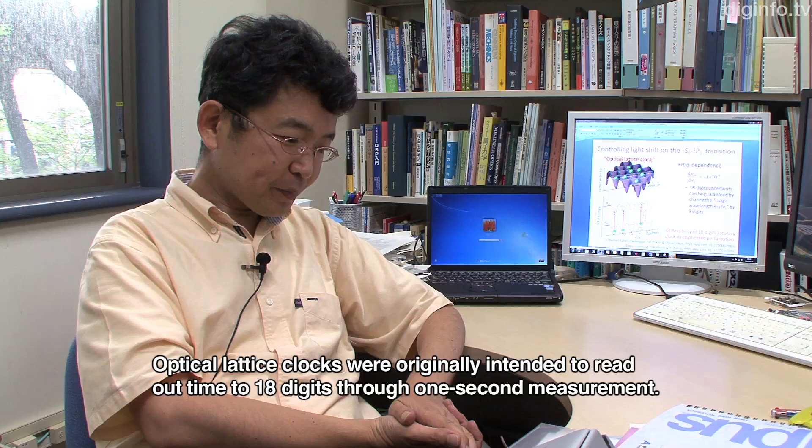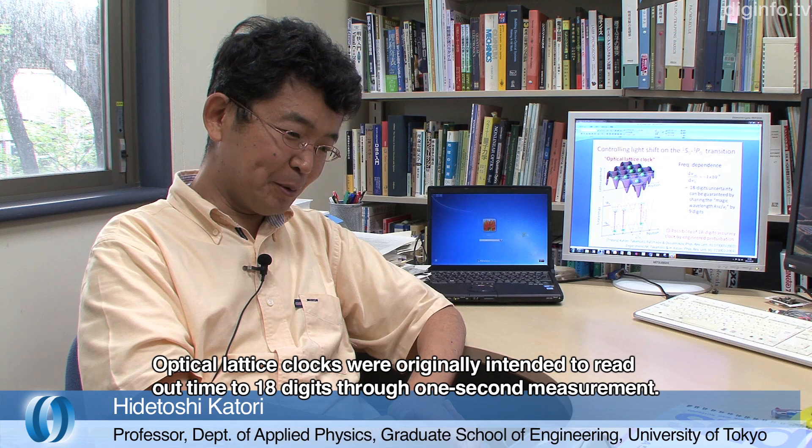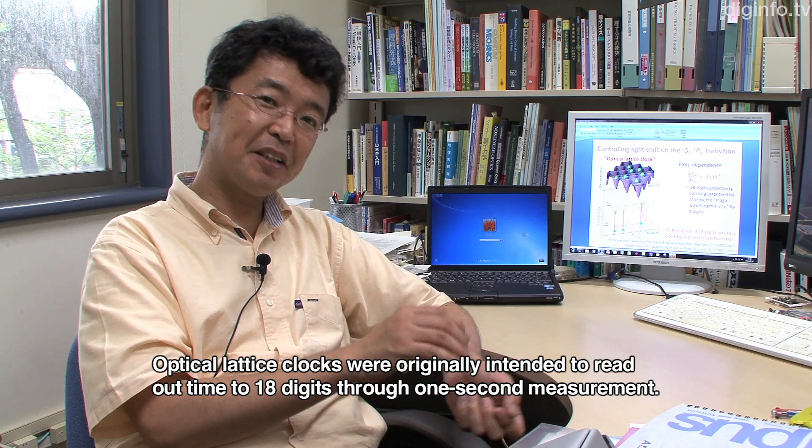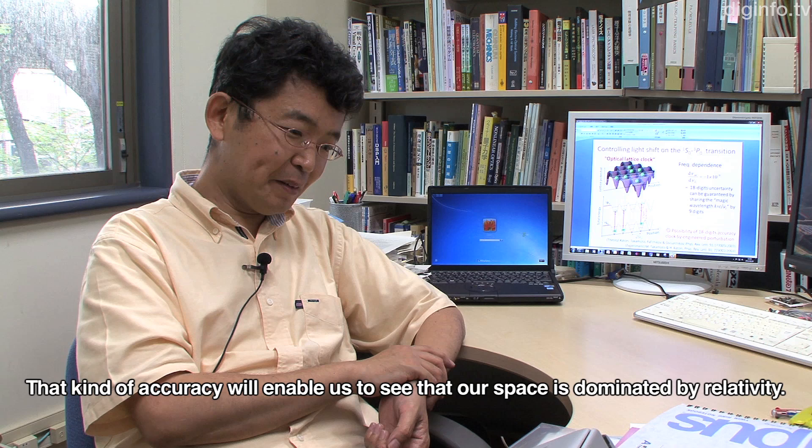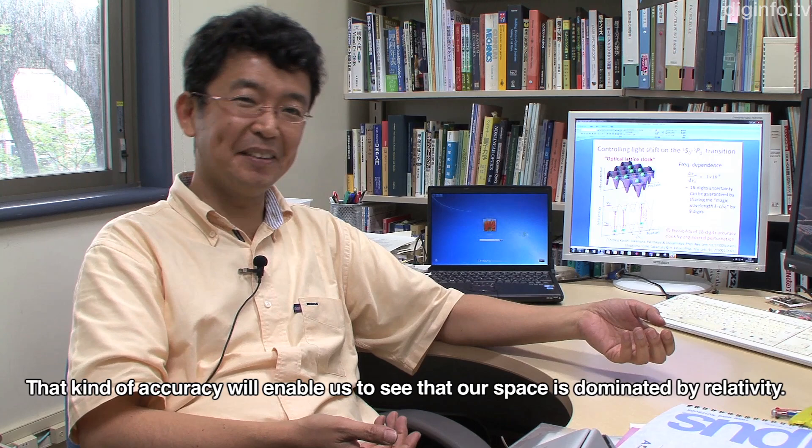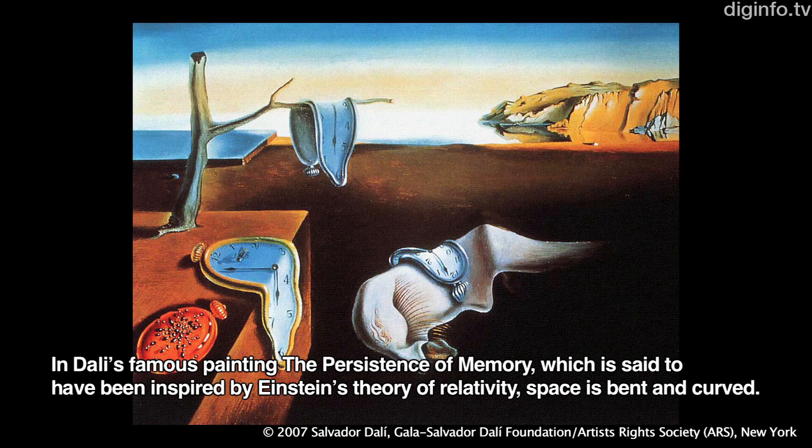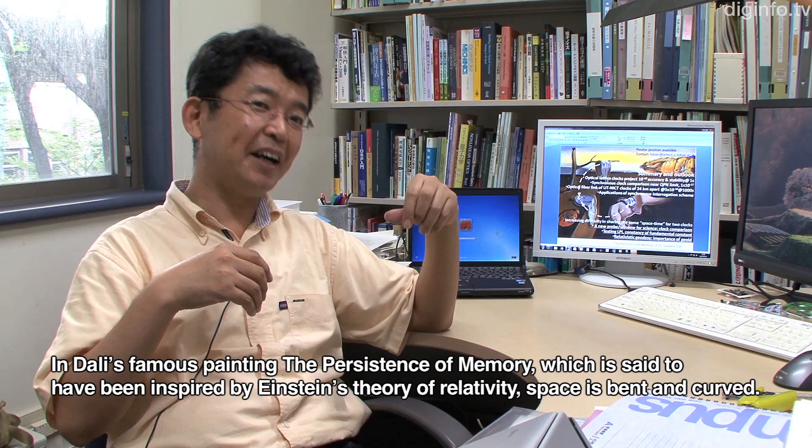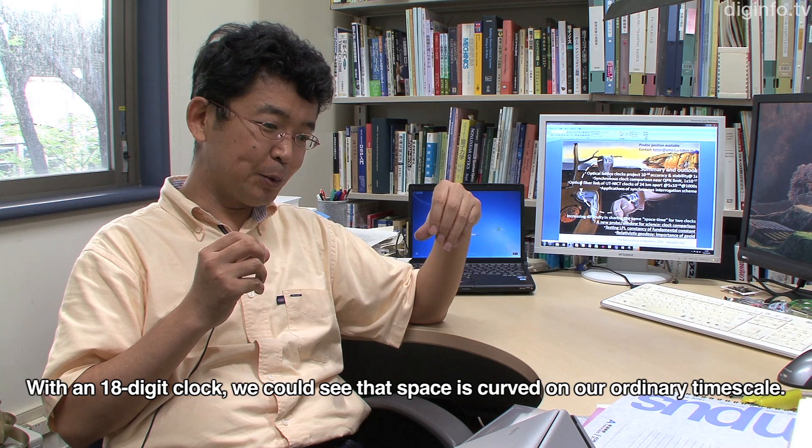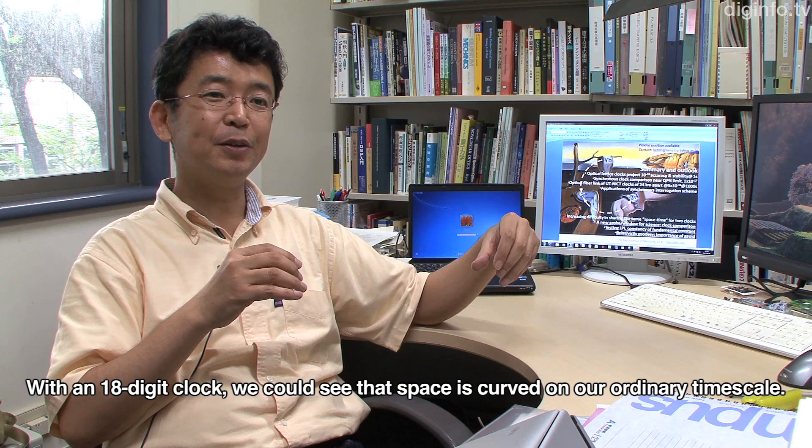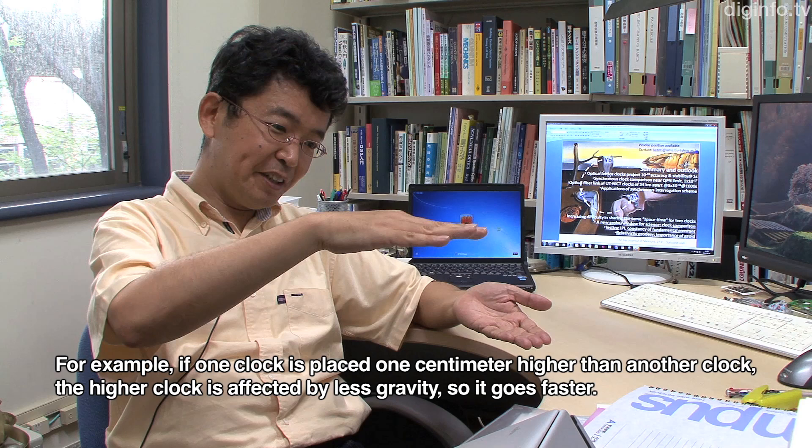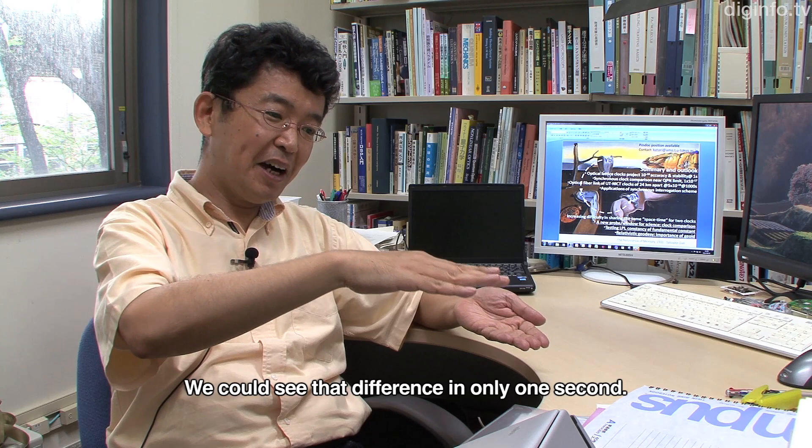With the optical lattice clock at 18 decimal places accuracy, we can see that space is curved on our ordinary timescale. For example, if you raise the clock just 1 centimeter high, you can detect the difference in time. That's what we can measure.